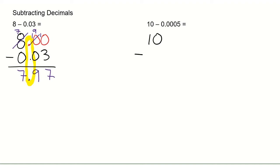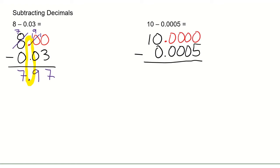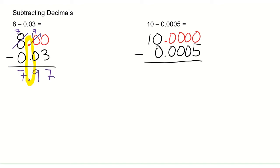If I have 10 minus 0.0005, I'm going to put a decimal to the right of my whole number and add zeros as placeholders. Now I can do my subtraction. Once again I am subtracting from 0. Zeros don't have any values, so I'm going to need to borrow. I go to the left, see another 0, so I have to keep going until I find a number with some value. The first number is a 1, so I'm going to borrow a 1, make this one a 10, and reduce the 1 by 1, making that 0.